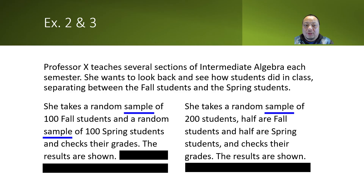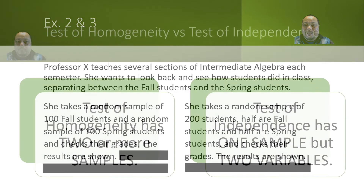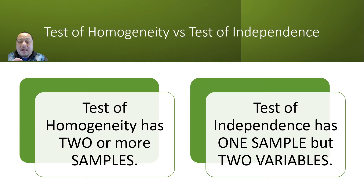That's the rule. Let's write it down. A test of homogeneity uses two or more samples. A test of independence uses one sample with two variables. Don't forget that we're looking at observed data only.